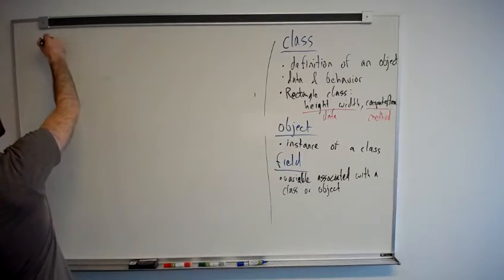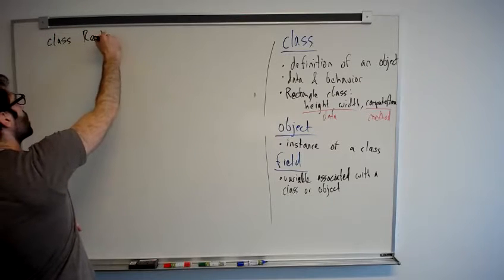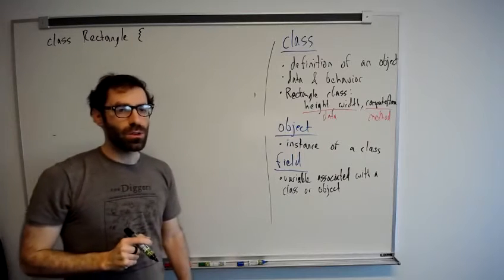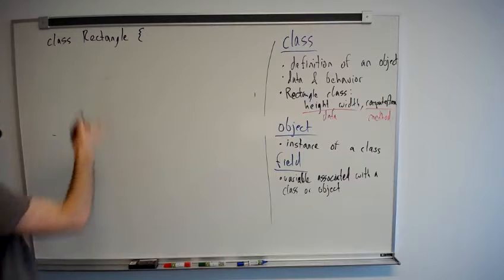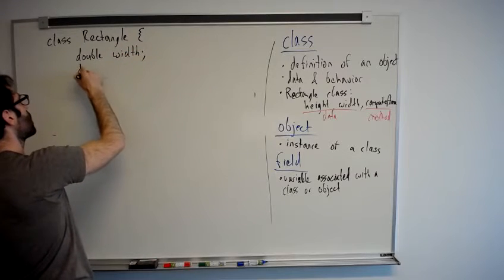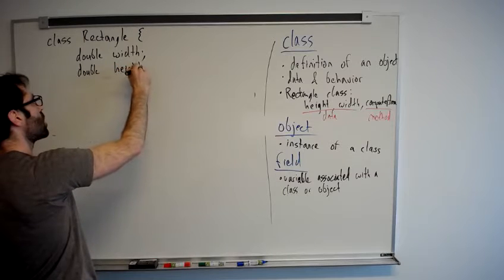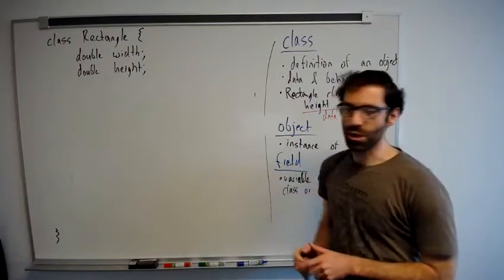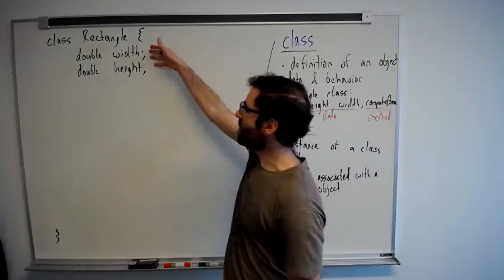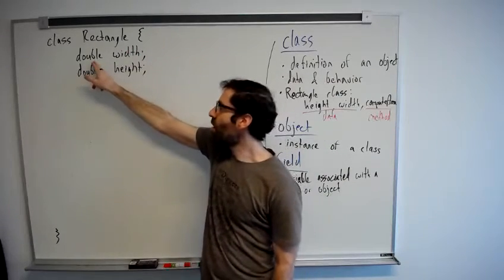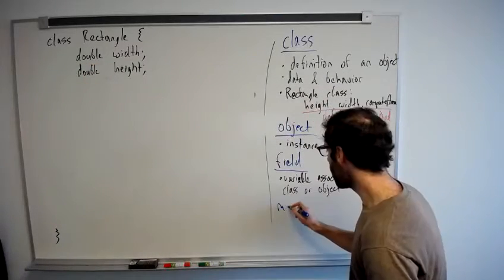We would begin our Rectangle class: class Rectangle, open curly bracket. And then we would declare the fields of that object. They are typically declared first. And so we need to give them a type and a name, semicolon, and a closing curly brace to show where the class definition ends. So this class definition is what says all right, every instance of a rectangle, every rectangle object has a width field of type double and a height field of type double.